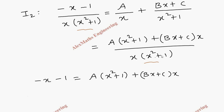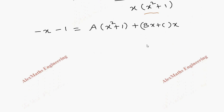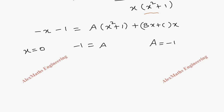Let's take suitable values of x to find the constants A, B, and C. The first value we are going to take is x equals 0. This gives minus 1 equal to A, since the second term becomes 0. So we got the value of A, which is minus 1.